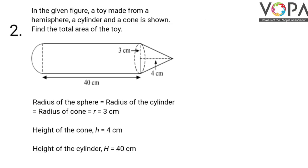Here we will first write what is given. Radius of the sphere equals radius of the cylinder and radius of the cone. All the three radii are equal to r, that is 3 cm. Height of the cone h is equal to 4 cm and height of the cylinder H is equal to 40 cm.